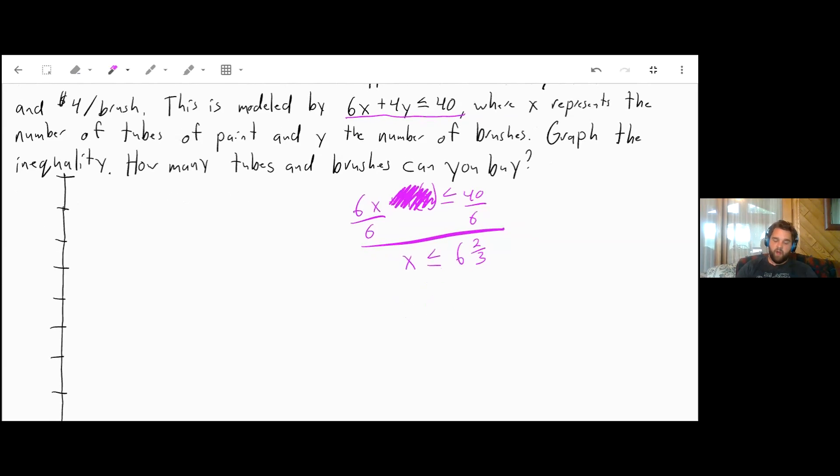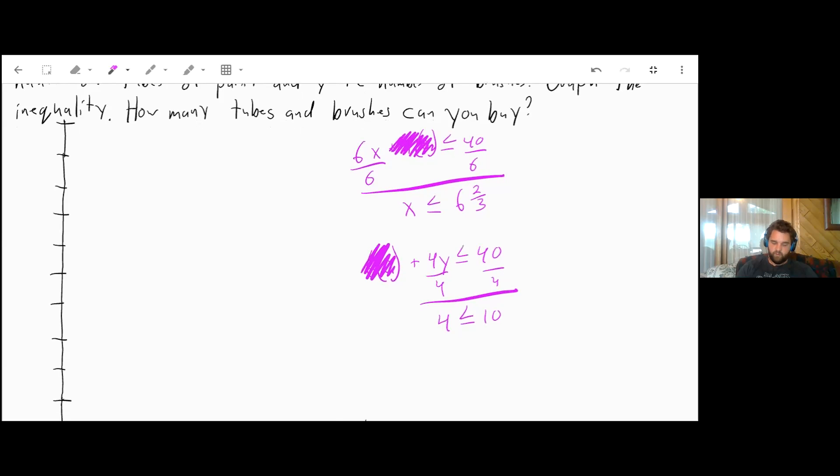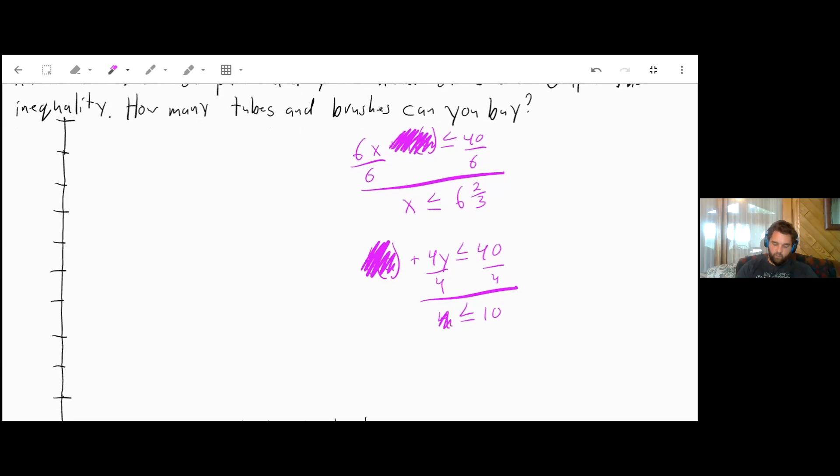We can do the same thing to find our y-intercept. That's 6(0) + 4y ≤ 40, because our x-coordinate is 0 for our y-intercept. That cancels out that term. Divide both sides by 4. y has to be less than or equal to 10.